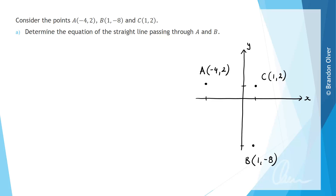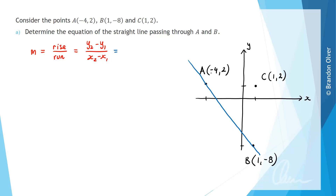We're asked to determine the equation of the line passing through A and B. To do that we start by calculating the gradient, which is equal to the rise over the run, or algebraically y2 minus y1 over x2 minus x1. That gives us 2 subtract negative 8 divided by negative 4 minus 1, which is positive 10 divided by negative 5, which simplifies to negative 2.